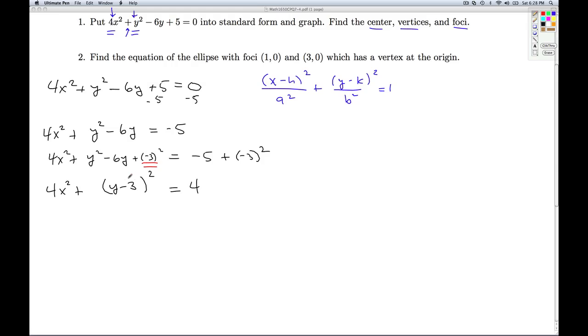Alright, so I have perfect squares on both sides. Now I need everything equal to 1. So to accomplish that, I'm going to divide both sides by the 4. I'll do the division term by term, and I get x squared plus (y - 3)² / 4 equals 1. Now you may say, well, it doesn't quite look like this format. What's the h and what's the a?